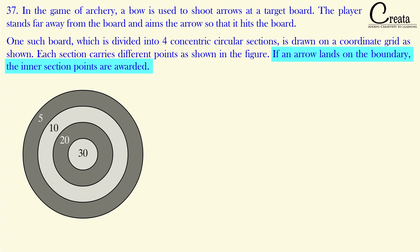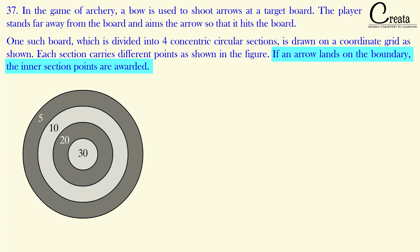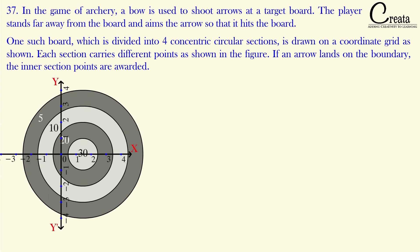For example, if the arrow lands on the inner boundary, the player gets 30 points — the points of the inner zone. Similarly, if the arrow lands on the next boundary, the player gets 10 points, the inner zone points of that boundary. This rule will be used in the question. Now let's understand these questions from the coordinate geometry point of view.